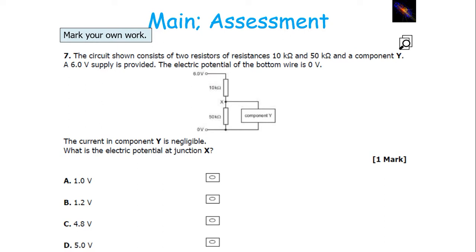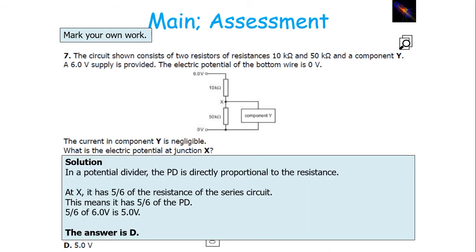The next question asks for the electrical potential at X in a potential divider situation. In a potential divider, PD is directly proportional to resistance. At X, there is 50 kilo-ohms, but above X it has 10 kilo-ohms. So it takes 5 sixths of the total resistance, because the total resistance of the circuit is 60 kilo-ohms and the X branch has 50 kilo-ohms. This means it will take 5 sixths of the potential difference. The EMF is 6 volts, so 5 sixths of 6 volts is 5 volts.